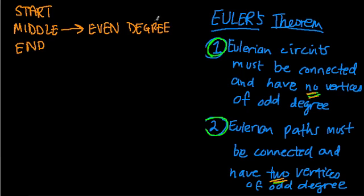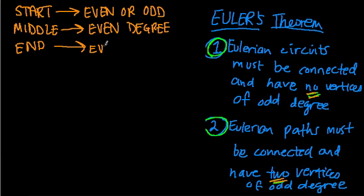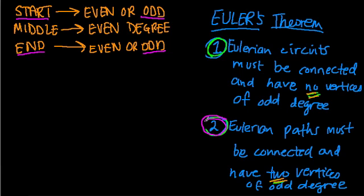Now, the interesting thing about the start and end vertices is that they can be even or odd, depending on whether you have a path or a circuit. And we can already see that since there can only be one start and one end, the maximum number of odd vertices you can have is two vertices, which feeds into this observation: no matter how we construct these graphs, we would have one start and one end, and it is possible for them both to be odd. So for paths, we can only have two vertices of odd degree.